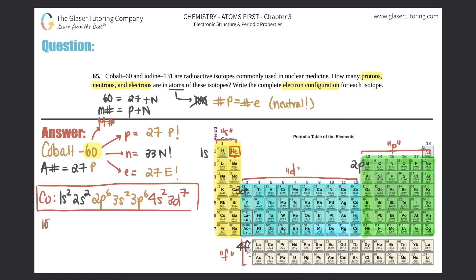So iodine, you're going to basically do the same thing, but just for iodine. So the first thing they want to know is the protons, neutrons, and electrons. And for all of you that want to know what iodine-131 is used for in nuclear medicine, it's basically used for hyperthyroidism.